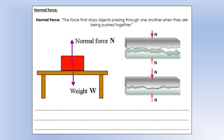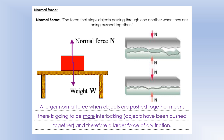We can also change dry friction by pushing objects together, which creates what's called a normal force. The larger the normal force, the more the surfaces are pushed together, which increases interlocking and leads to a bigger friction force. You can observe this yourself: an object slides quite easily across a table, but if you push down on it while sliding, it becomes much harder to move.